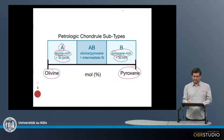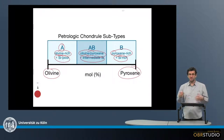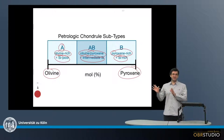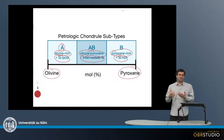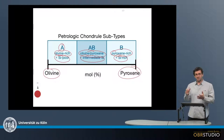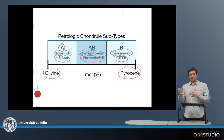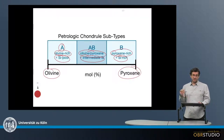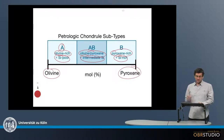Then there are intermediate chondrules with some intermediate olivine-pyroxene content, and this is why it is a qualitative scheme — because it is not entirely clear when to designate a chondrule A or B, meaning when it has enough olivine to be Type A or enough pyroxene to be Type B.